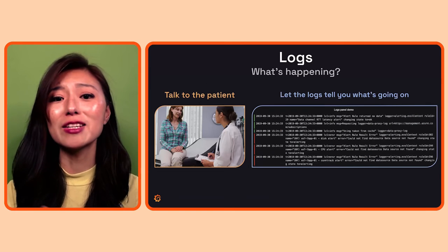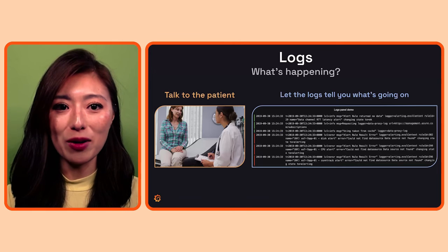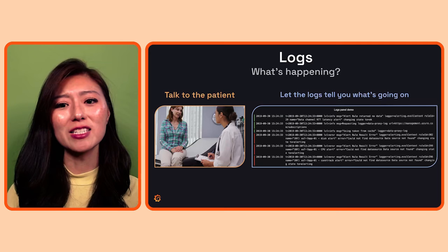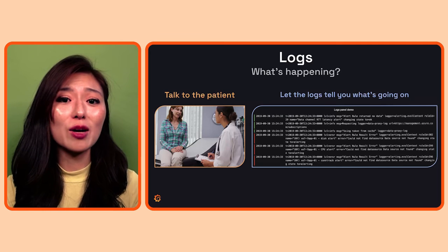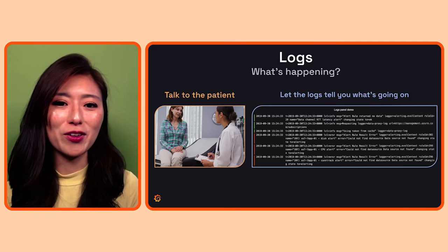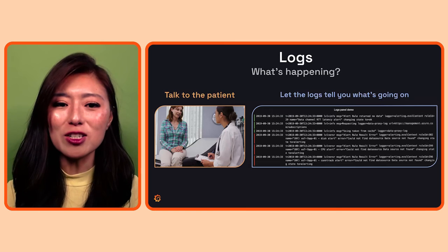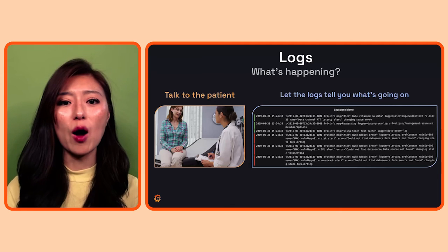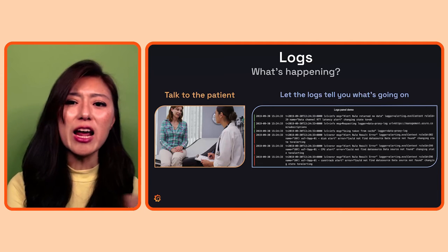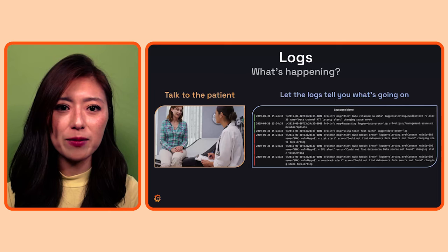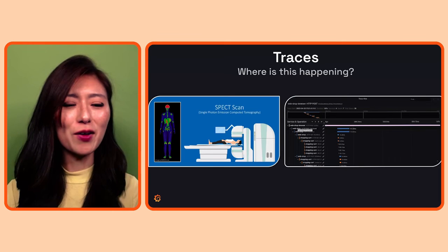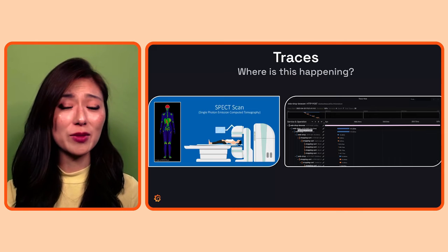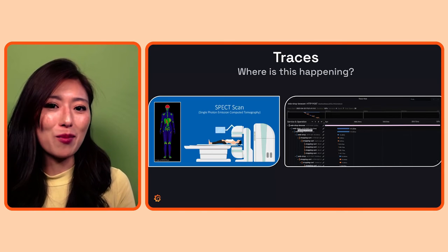And if you know something's off, the next step is to figure out what is happening. Just as a doctor would talk to a patient to get more context, we can refer to logs to get more context about what's going on within our system. Logs are text records of events that have occurred within our system, and these provide clues about when the problem occurred and which events are correlated with it. So — metrics alert us that something's happening, and logs tell us what's happening.